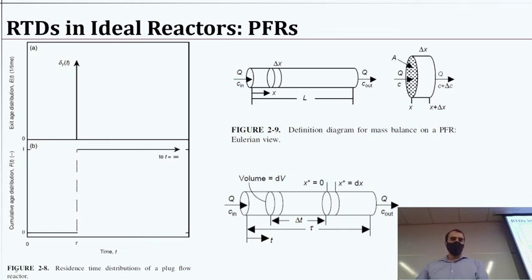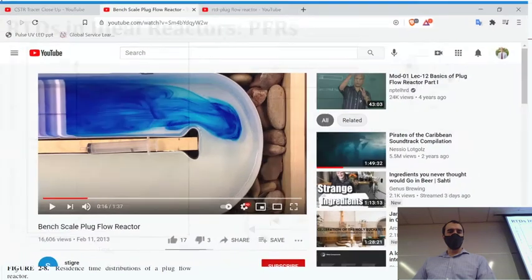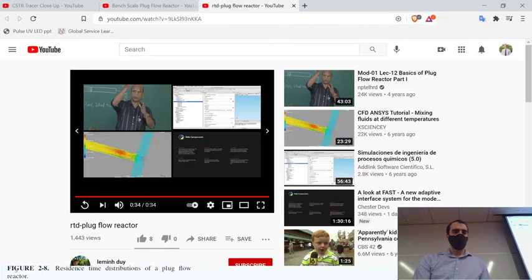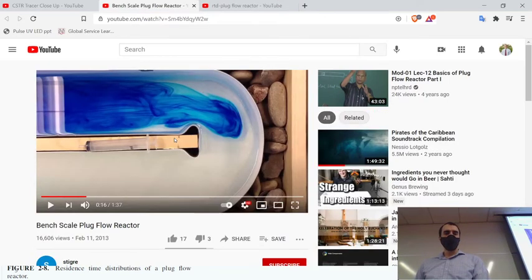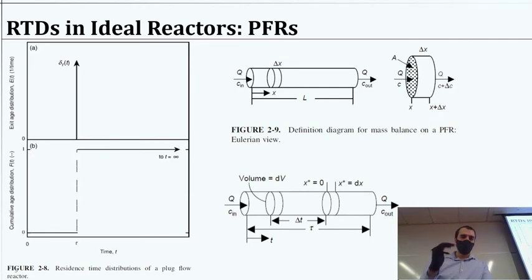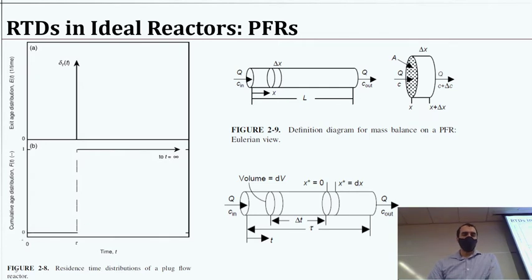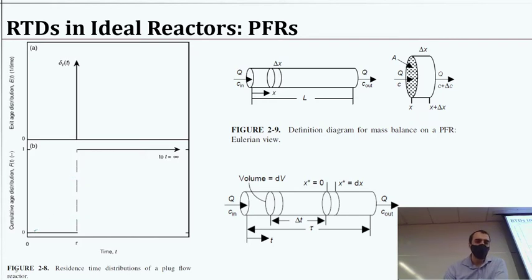Looking at these in ideal reactors: for a plug flow reactor with a pulse input, we'd get that pulse coming in and it came out like that sometime later. With a step input, we stepped it up at time zero, kept adding it, until we had that much coming out — and it was instant in the ideal case. Whereas a non-ideal reactor would have some tailing. There are different mathematical approaches to the plug flow reactor, including the Eulerian view and Lagrangian view — essentially different ways of defining mathematically what's happening in the plugs.